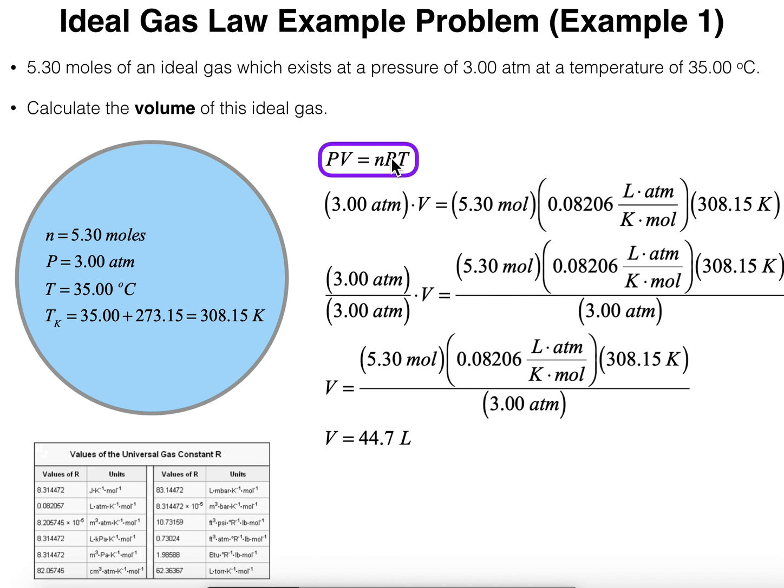A couple of things. First of all, this is our ideal gas constant. This is either something you would need to memorize, which you can do, or you can be given these gas constants in a table. We'll talk about that in a minute.